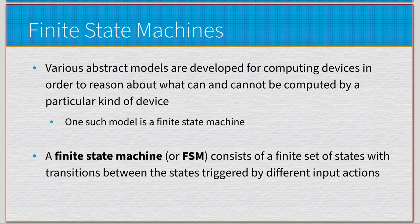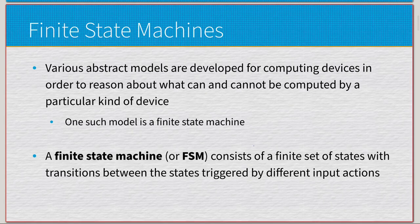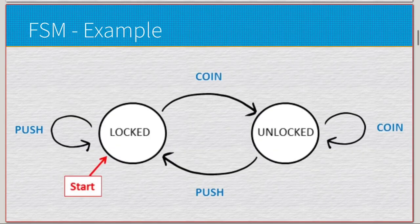A finite state machine, or FSM, consists of a finite set of states with transitions between the states triggered by different input actions. A very simple example is going to be this one right here.